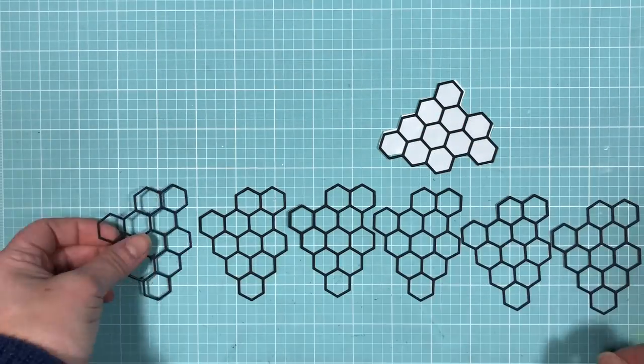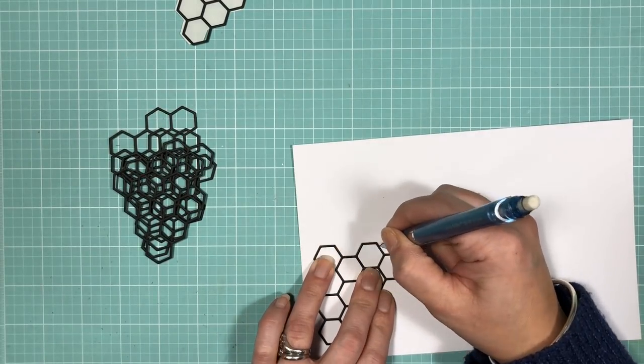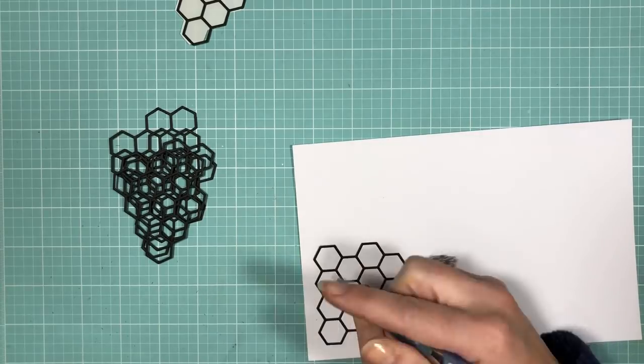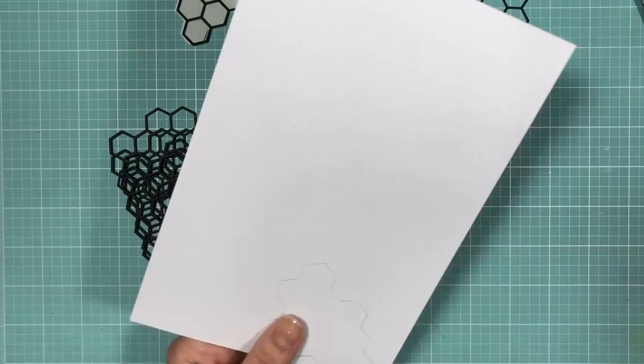To build up the shaker portion of the card I just die cut another six layers of the hexagon bunches. And here I'm just tracing the outline of the die that will be used at the back of the shaker portion of the card that will hold all the sequins in place.